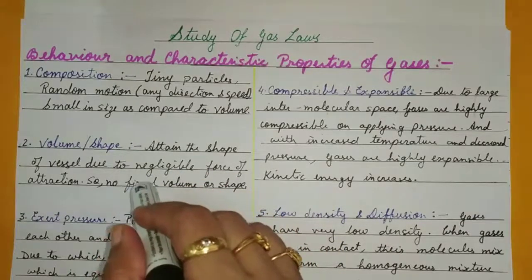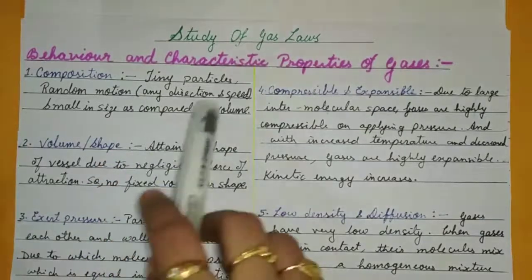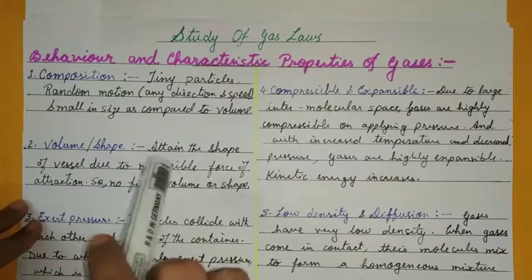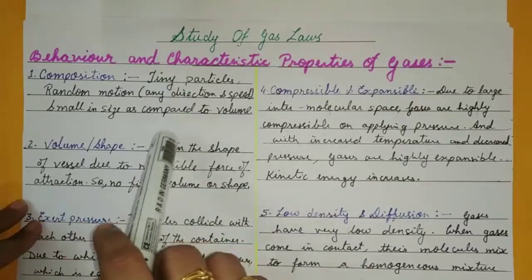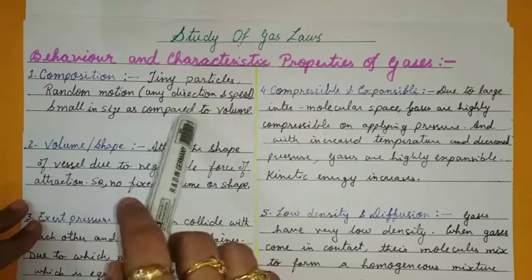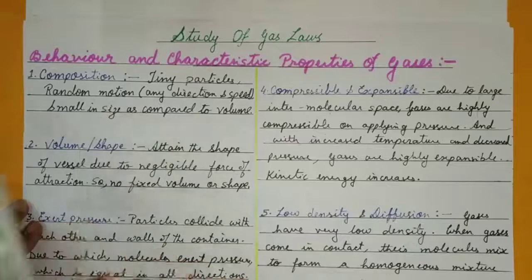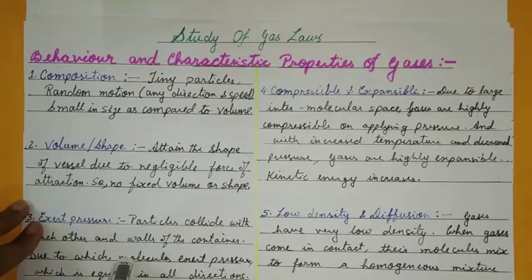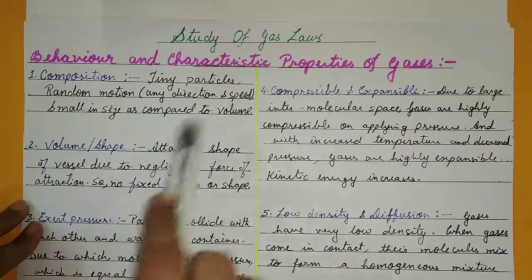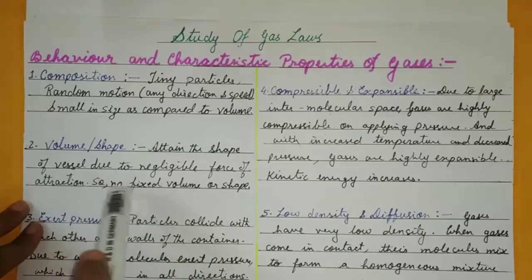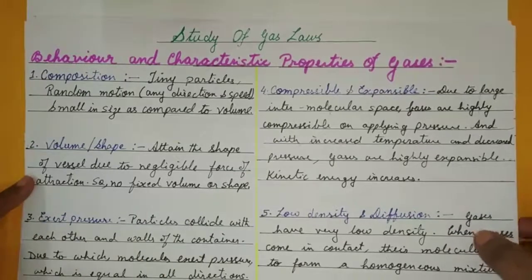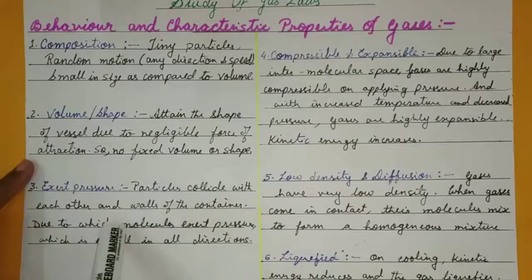Let us now talk about the behavior and characteristic properties of gases. First, regarding kinetic theory: every matter is made up of tiny particles with random motion in any direction and speed — very much so in gases. Regarding shape and volume, gas particles attain the shape of the vessel due to negligible force of attraction, so there is no fixed volume or shape. Particles collide with each other as well as the walls, exerting pressure equal in all directions.